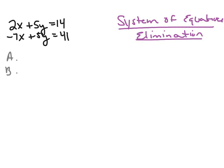We're going to continue looking at solving systems of equations using the elimination method. When solving systems of equations using elimination, the first thing we want to do is make sure that both equations are set up in standard form, so that we have the x's, the y's, and the constants lined up one on top of each other — which in this case has been done for us.